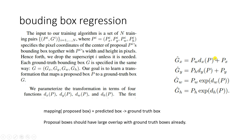The main idea is: we have the proposed box, we estimate the mapping, and we get predicted boxes that should be as close as possible to the ground truth. One key thing: we want the proposed boxes to have large overlap with the ground truth box. If the proposal is far away, regression doesn't make sense — we need large overlap.